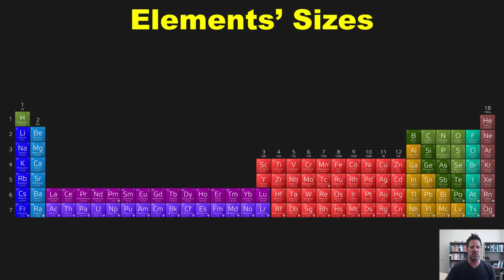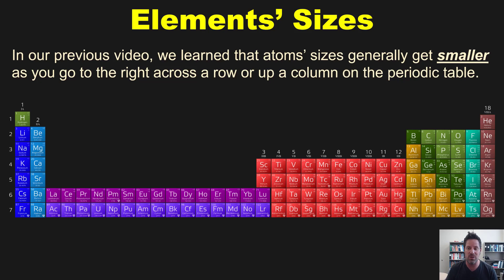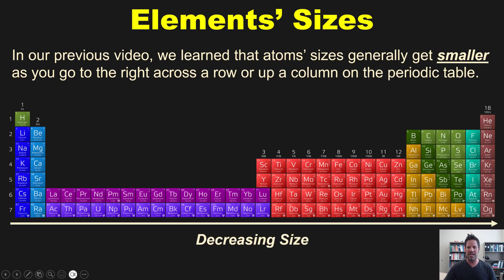So as we discussed in our previous video, link in the description below and possibly floating as a link over my head right now, atom sizes generally get smaller as you go to the right and up on the periodic table, thereby making francium the largest element and helium the smallest. But I ask you, what about the sizes of ions?